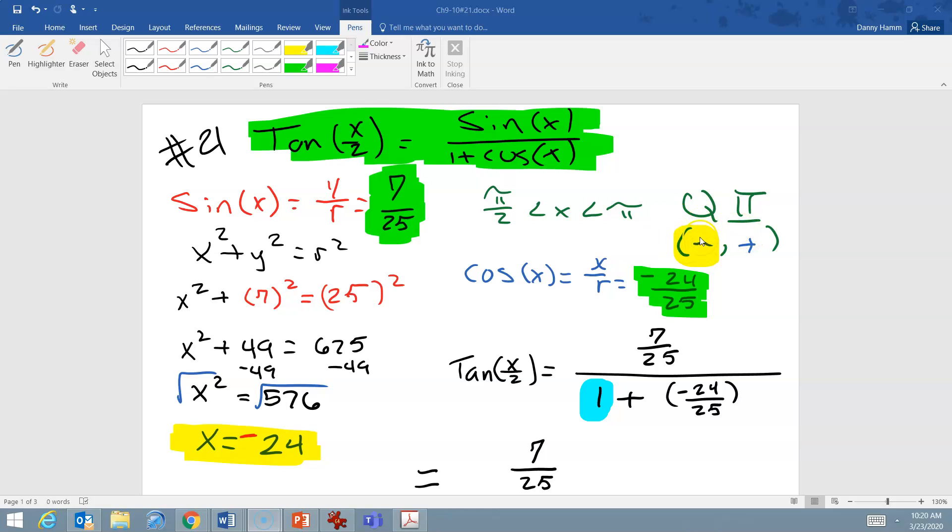This is going to be essential when we're trying to find the value of x for our cosine value. So in order to find that value of x, we use x squared plus y squared is equal to r squared, and then using the given information about y and r, 7 and 25, we simply plug those in. So we have x squared plus 7 squared is equal to 25 squared.